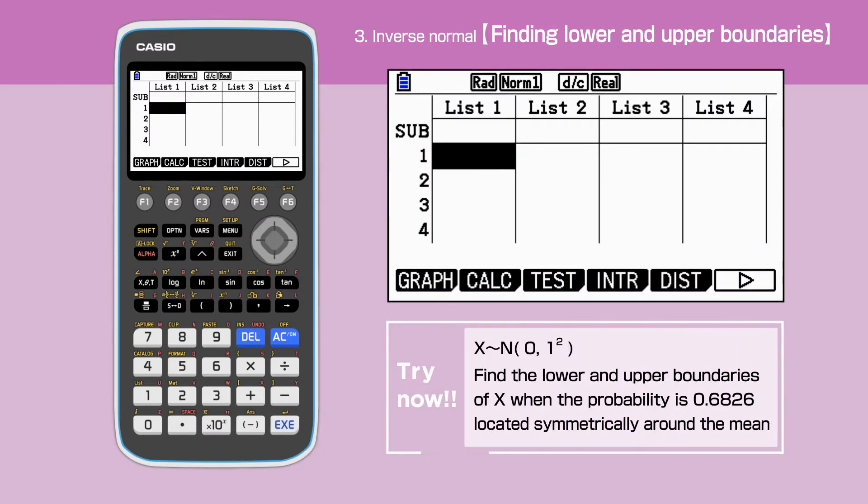In this video, we are going to solve the following question. X is a random variable that is normally distributed with a mean of 0 and standard deviation of 1.